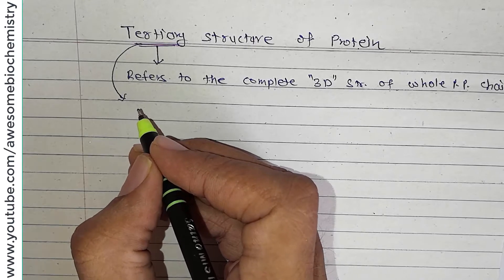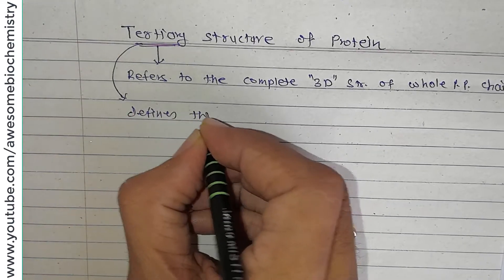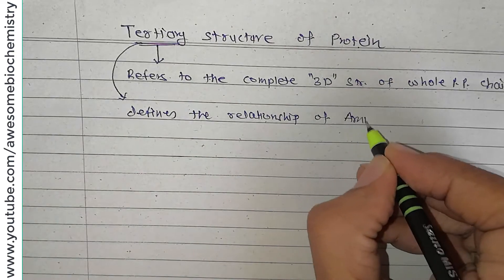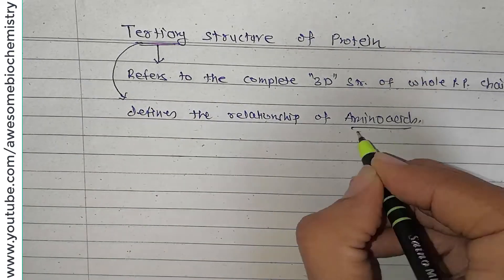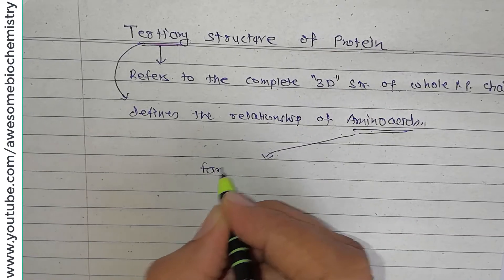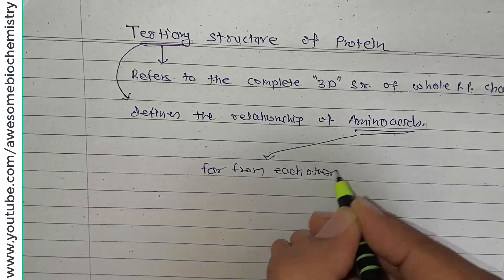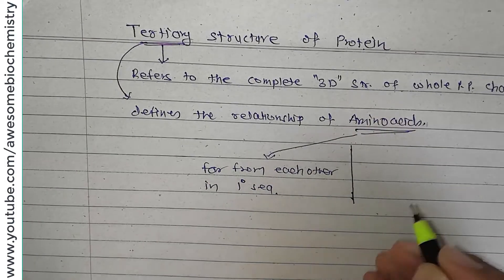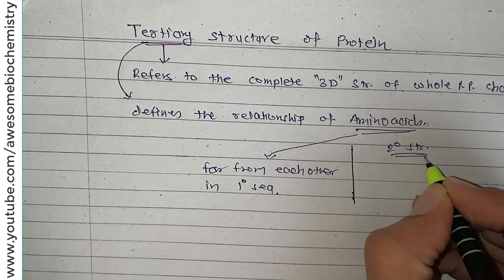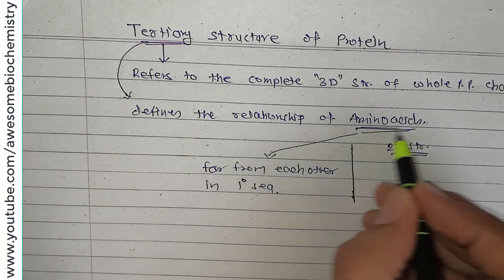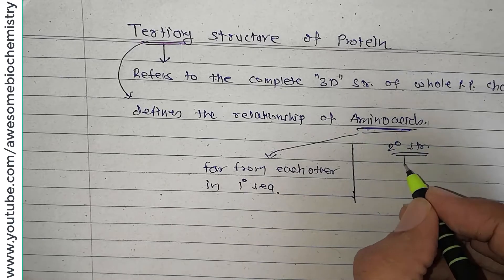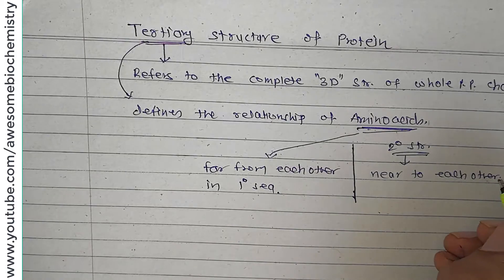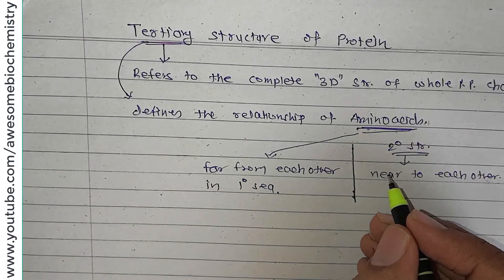Tertiary structure defines the relationship of amino acids that are very far from each other in the linear sequence. This must be differentiated from secondary structure — secondary structure also defines relationships between amino acids, but only those that are near to each other, in terms of alpha helix and beta pleated sheet.